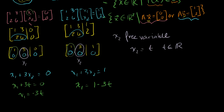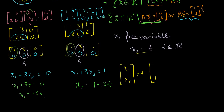If we write the solution sets in vector notation, the solution set for the first equation is (x1, x2) equal to t times (−3, 1), where t is a member of the reals. So it's just scalar multiples of the vector (−3, 1). If we think of this as a position vector, this will be a line in R2.